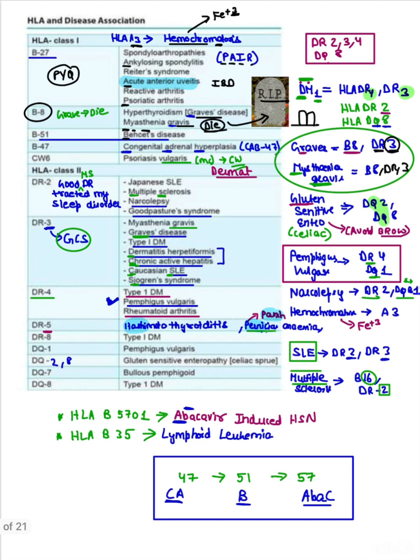Then coming to congenital adrenal hyperplasia, remember it like CAB-47: congenital adrenal hyperplasia and B47. CAB-47. Then psoriasis vulgaris, this is the most common reason you might have seen in your dermat posting.